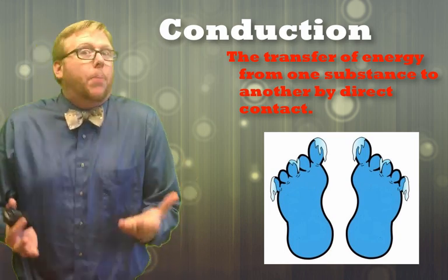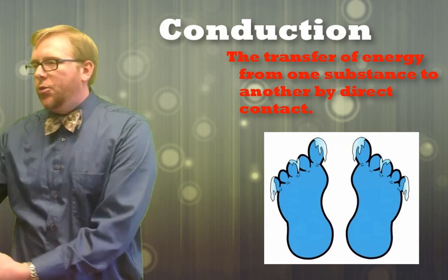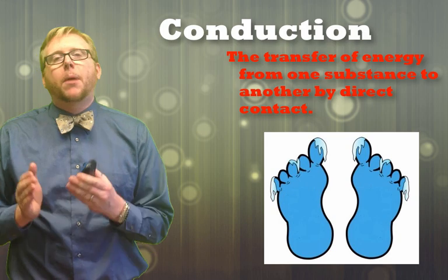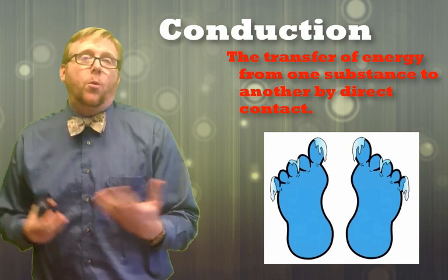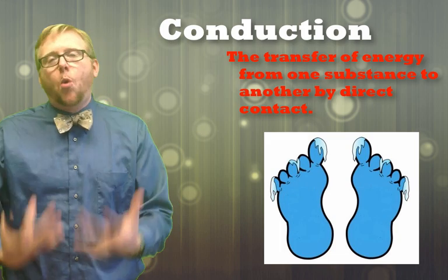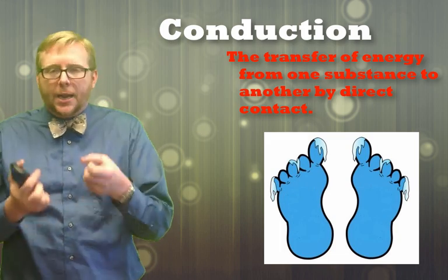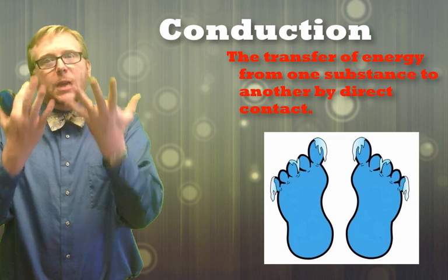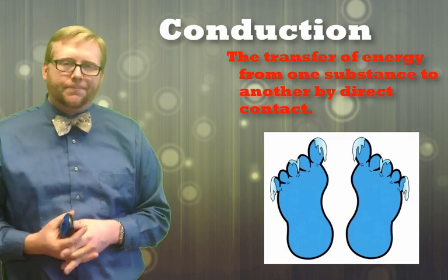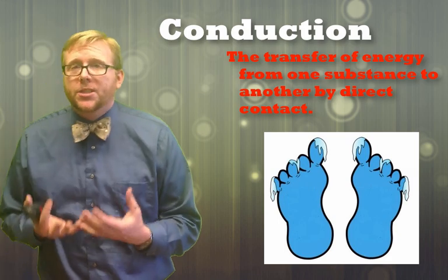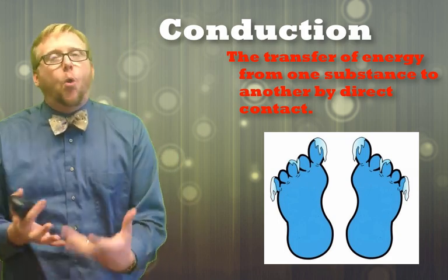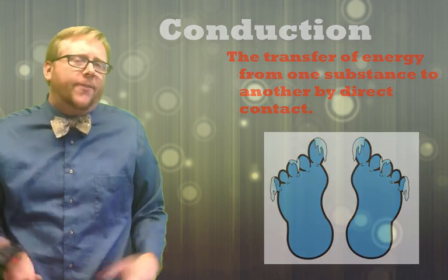The same thing happens when you touch a warm pot — the pot is warm, you touch it, and it is transferring heat. Energy is always moving from hot to cold. When air comes in contact with something hot, it receives that warmth. So when sunlight hits the earth and is absorbed, it warms up and also warms the air around it because they're in contact. Same thing happens with rock — when magma comes to the surface, it warms the rock around it because it touches it and creates warmer rock. That's conduction.